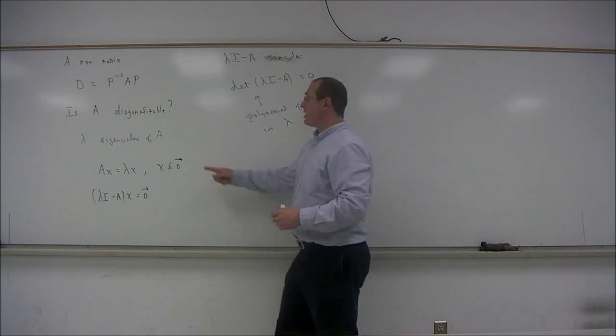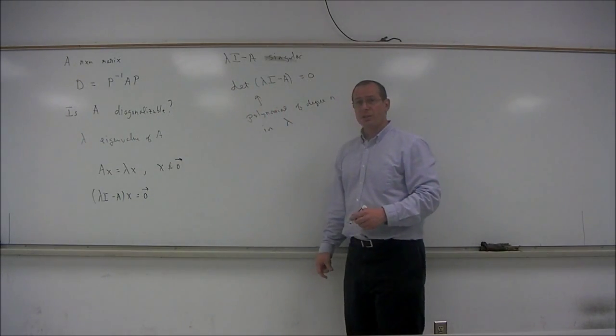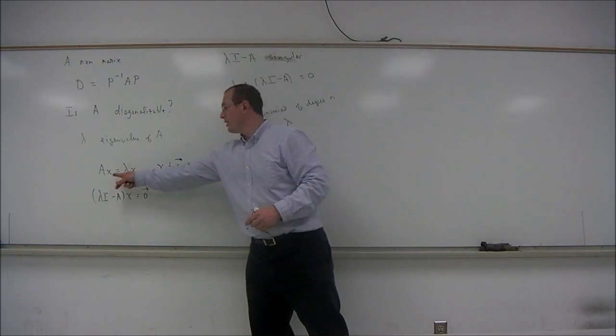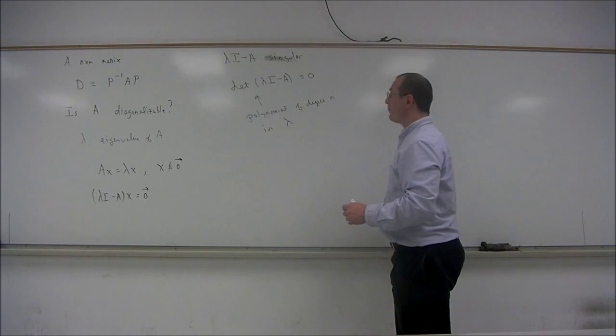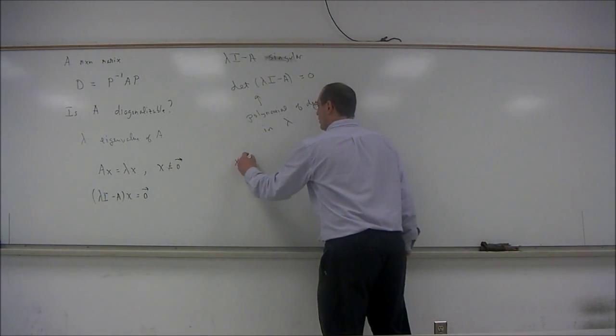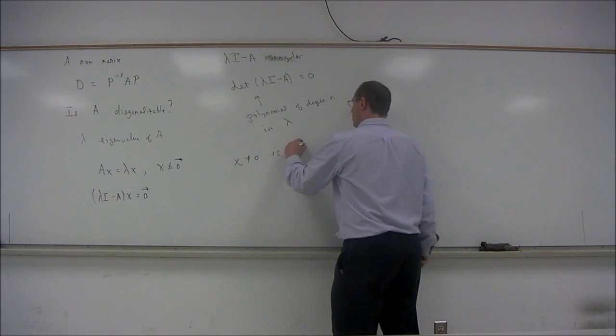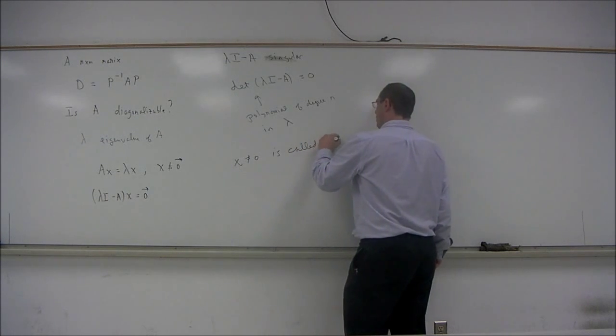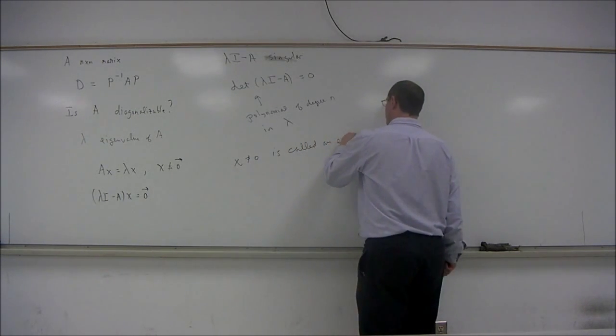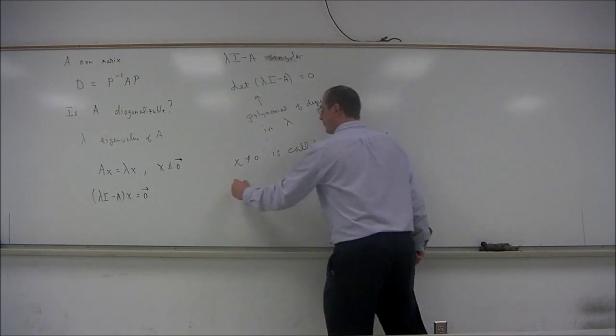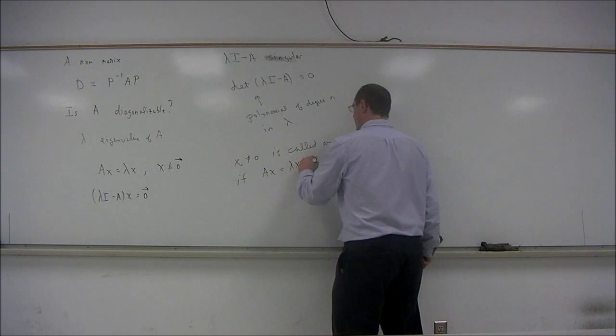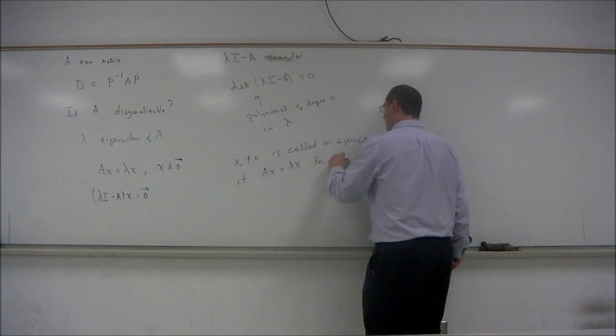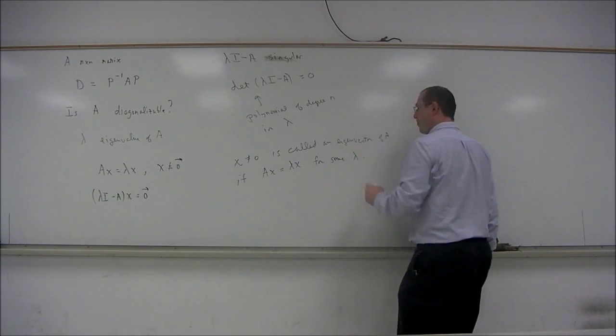Now, to answer the question, is A diagonalizable? We have to consider what are called the eigenvectors, the X's, the eigenvectors of the matrix A. So X not equal to zero is called an eigenvector of A if AX is equal to lambda X for some eigenvalue lambda.